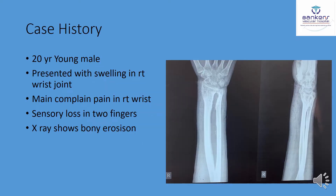This is a young patient who presented with swelling over the right wrist region. On x-ray, you can see bony erosion. The patient's main complaint is pain in the wrist region, along with restricted movement of pronation and supination. He also has sensory loss in the first two fingers. So all these problems are disturbing this young patient.